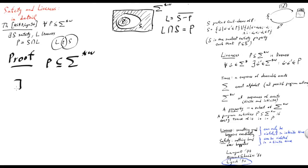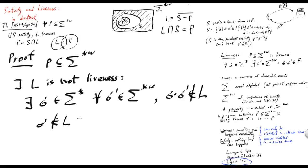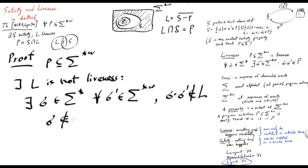Let's proceed by contradiction. Suppose that L is not liveness — that is, there exists a finite trace sigma such that for all extensions of it we don't get into L. Since no extension of sigma is in L, sigma itself is not in L. By construction L is the complement of S minus P. Also, sigma is a finite trace, so by construction sigma is in S minus P, because L is the complement of S minus P.